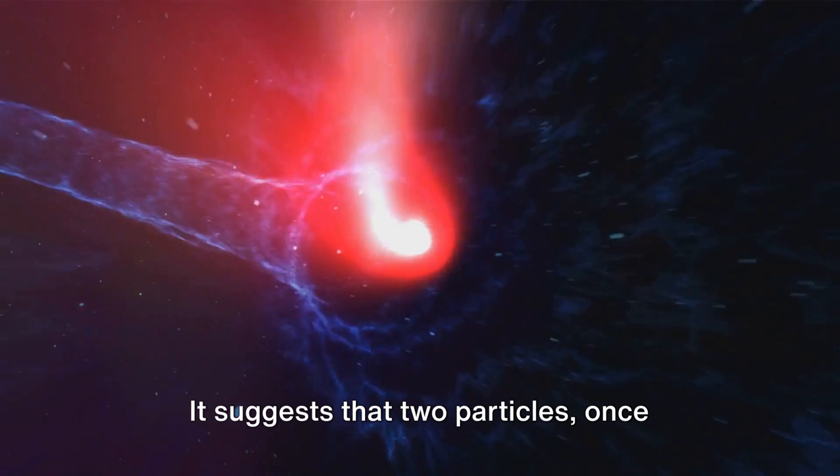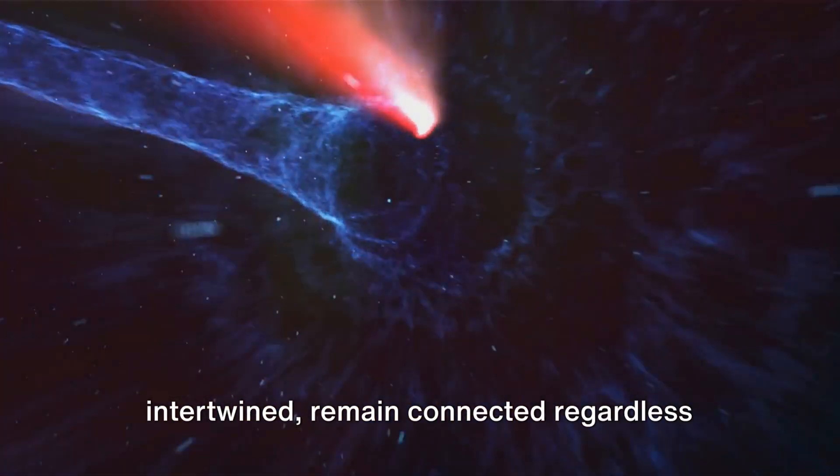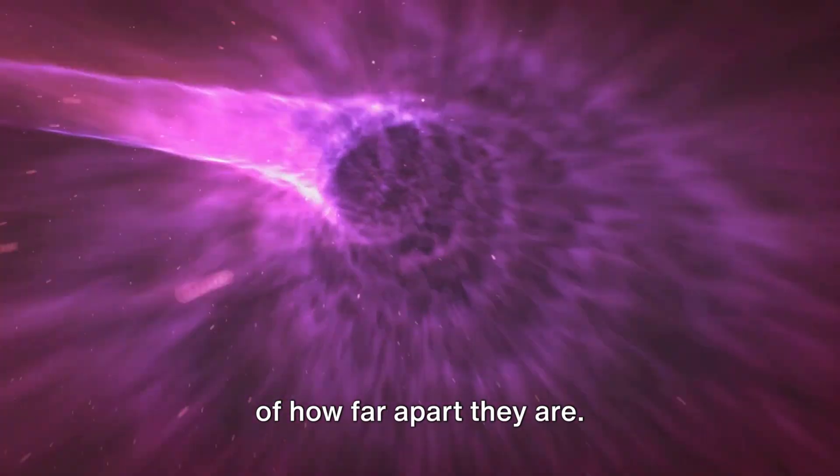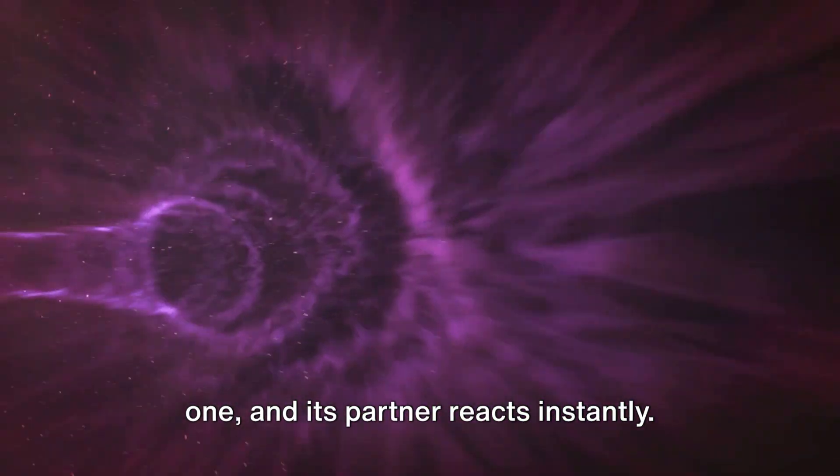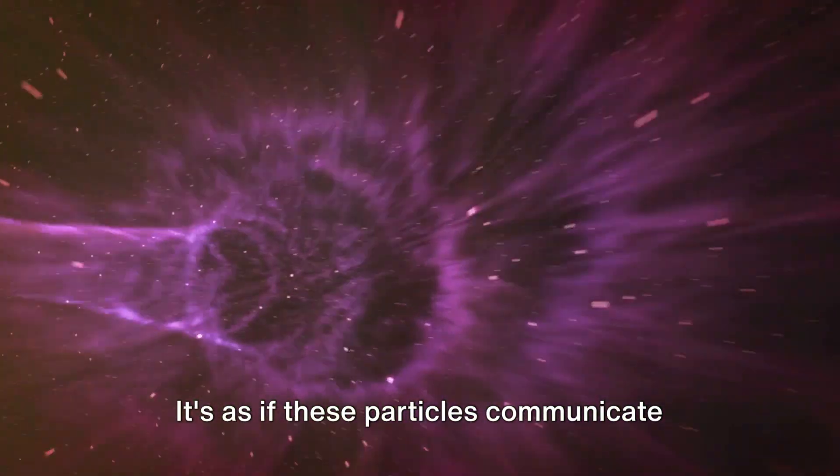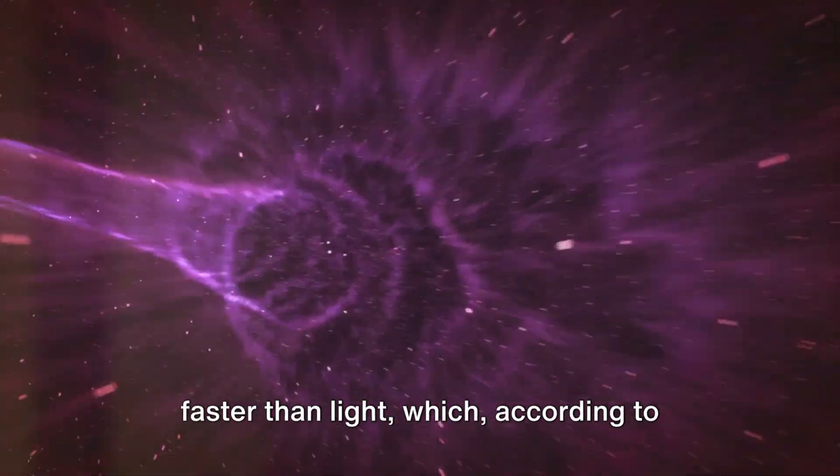It suggests that two particles, once intertwined, remain connected regardless of how far apart they are. Change the spin, position, or momentum of one, and its partner reacts instantly. It's as if these particles communicate faster than light, which, according to Einstein's theory of relativity, should be impossible.